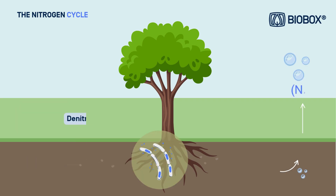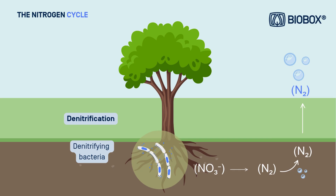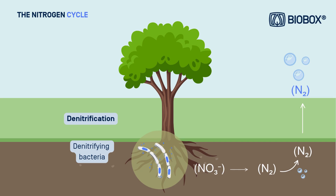The nitrogen cycle wouldn't be complete without denitrification, the process that returns nitrogen to the atmosphere in its molecular form. During denitrification, anaerobic bacteria — those that thrive in low or no oxygen conditions — convert the nitrate present in the soil into molecular nitrogen, which is then released back into the atmosphere.